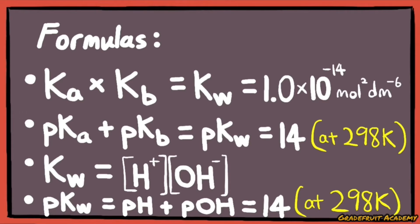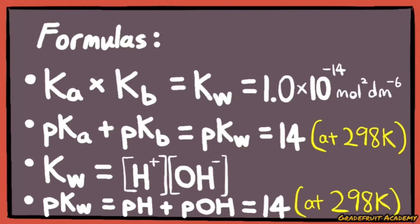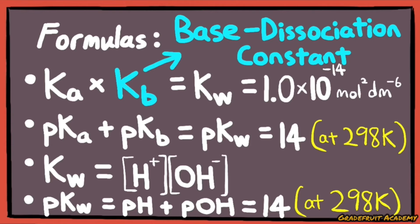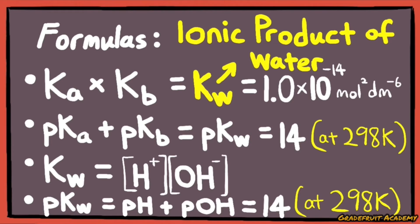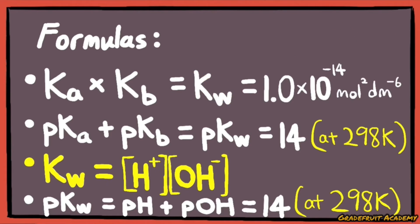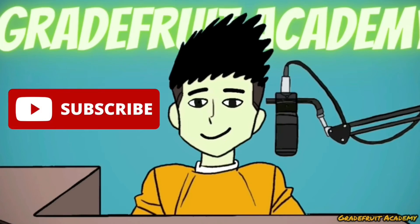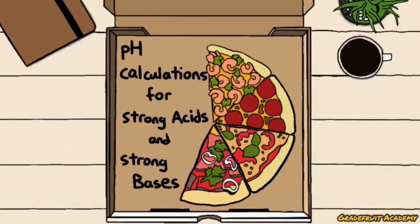Using this concept, we will need to learn and apply these formulas. Ka, Kb, and Kw are basically equilibrium constants where Ka is the acid dissociation constant, Kb is the base dissociation constant, and Kw is the ionic product of water, as shown by this formula. But don't worry about this right now as I'll be covering this in depth, so do stay tuned for my upcoming videos.